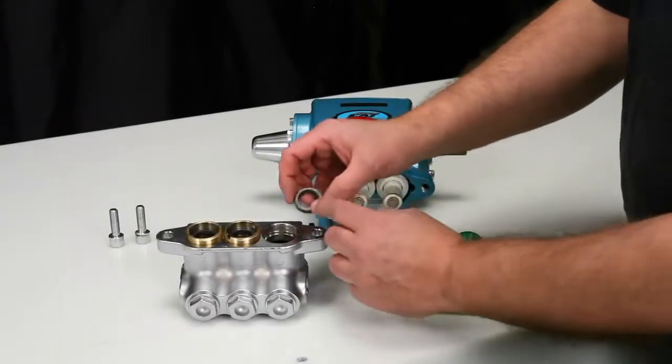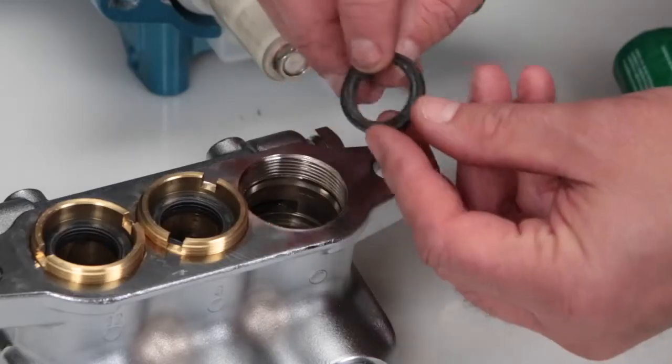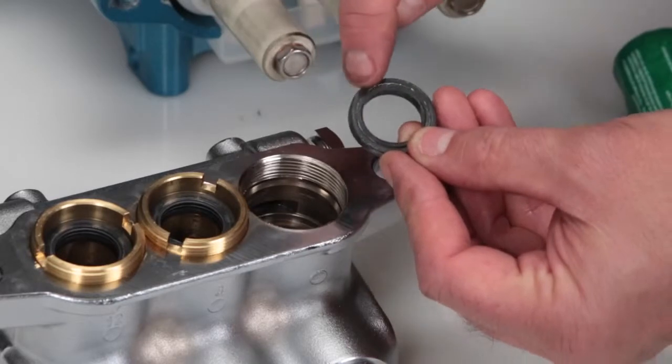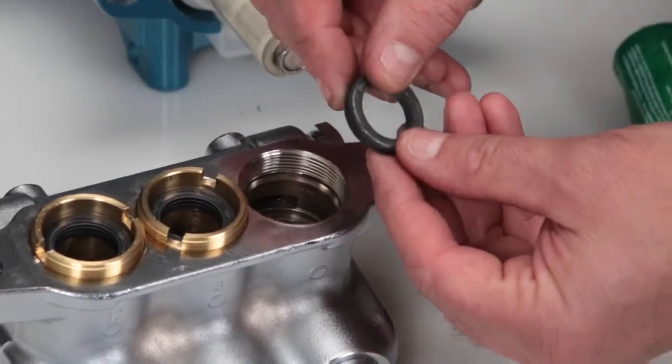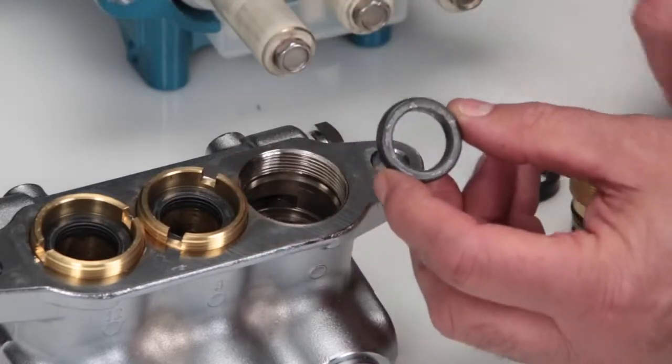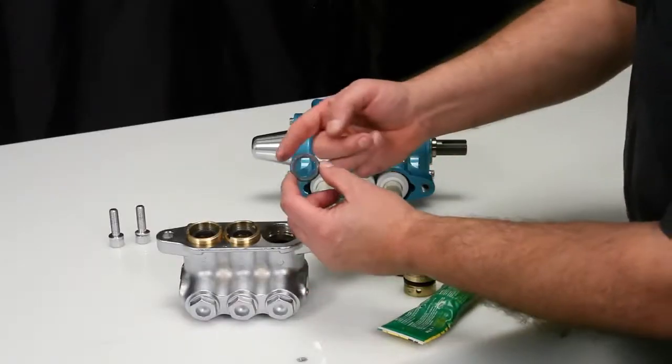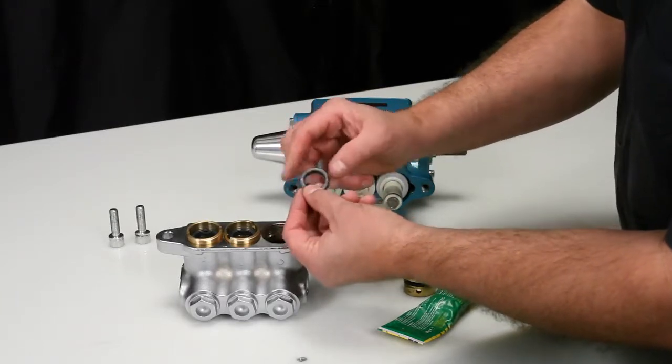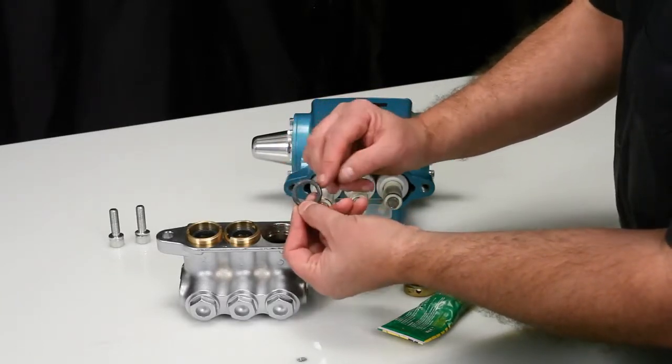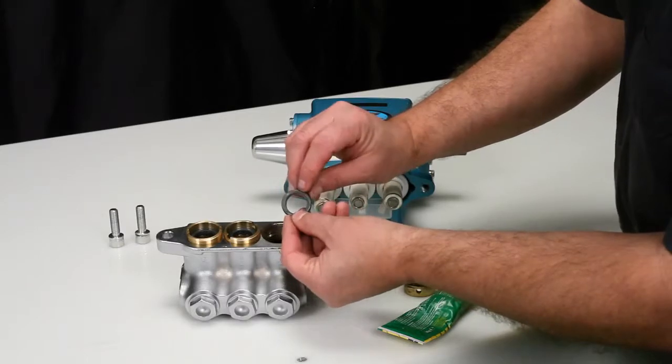To install new seals, begin with the high pressure seal. You will notice that one side of the high pressure seal has a groove while the other side is flat. Before installing, apply a liquid gasket to the outside surface of the high pressure seal. With the flat side facing up, press the high pressure seal into place.